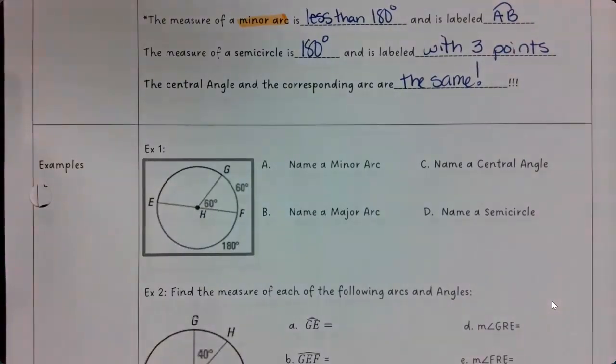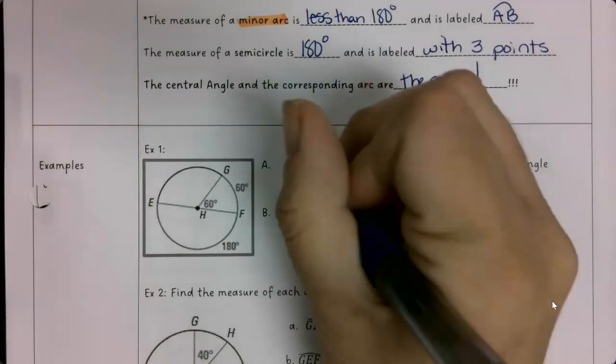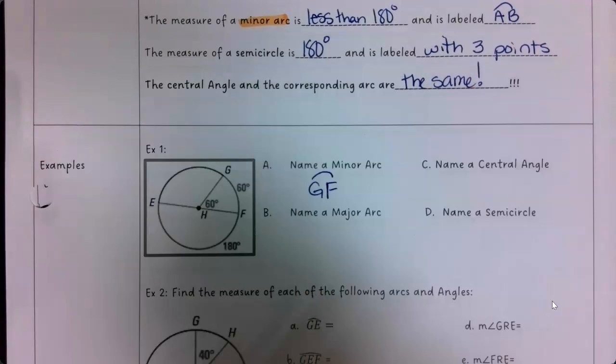So in my first example, what's a minor arc? Can someone give me two letters for a minor arc? GF. And then I make sure I have that curvy line above it.